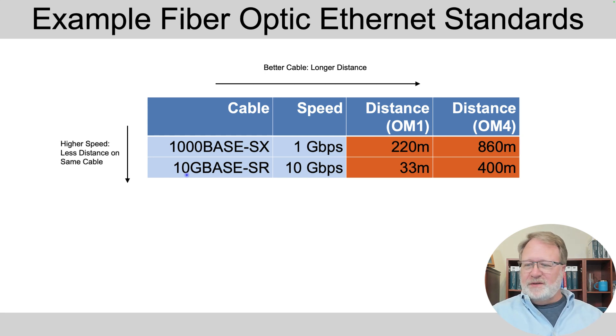All right. So a couple of big ideas here, as you see in the arrow lines around. So looking inside one standard, the better cabling gets you longer distances. Looking downward, comparing an older, slower standard to a newer, faster standard, to get the higher speed, you're going to get a little less distance on whatever cable you're using, right? 220 versus 33 meters, 860 versus 400. So a little less distance, but a little better speed. So it's a trade-off that you have to think about.